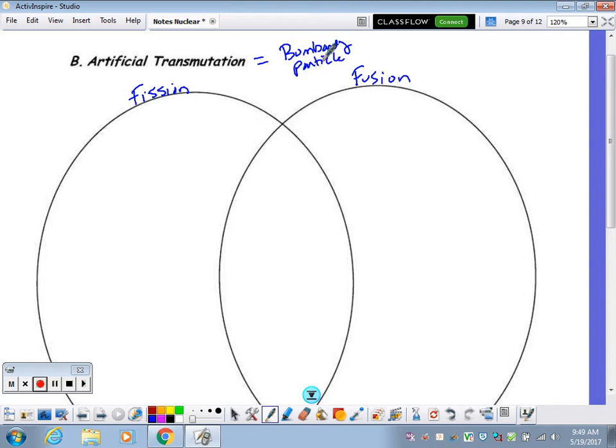In essence, you need to have two or more reactants. Every natural transmutation, only one reactant.